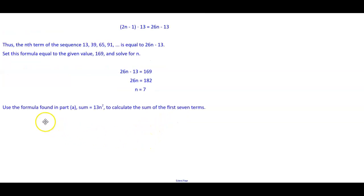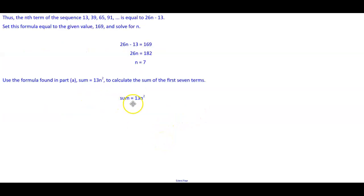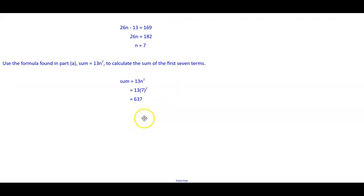Now we want to use the formula that we found in part A, where the sum equals 13 times n squared to calculate the sum of the first 7 terms. We know that the sum is equal to 13n squared. We're going to plug 7 in. 7 squared gives us 49, and 49 times 13 gives us 637. Therefore, the sum of the first 7 terms is 637.